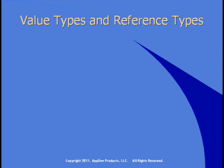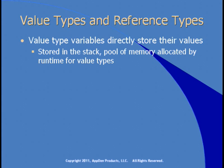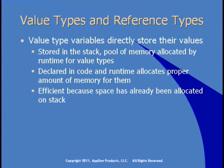In the previous section, we talked about converting from objects to specific data types. There are two types in the .NET framework: value types and reference types. A variable that contains a value type directly stores its values, and those values are stored in the stack, which is a pool of memory allocated by the runtime. Because you're declaring value types in your code, the runtime knows to allocate the proper amount of memory for them. All of the integer data types, floating point, decimal, and Boolean are all value types and they directly store their values.